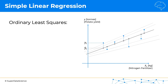So in this case, let's say again 15 kilograms of nitrogen were used, but the linear regression we're looking at predicts that only one and a half tons of potatoes would have been yielded from the farm. As you can see, there's a slight difference between the actual value and the predicted value.